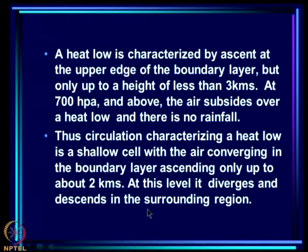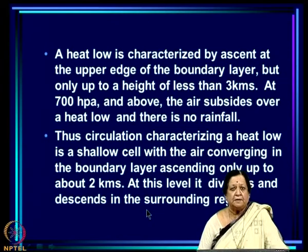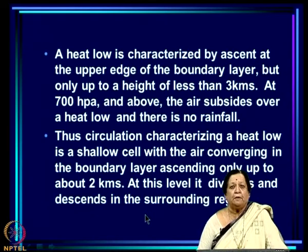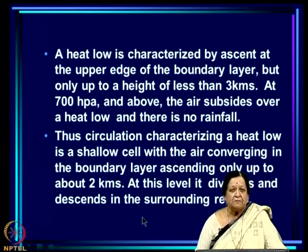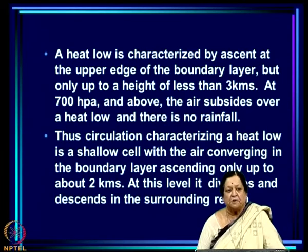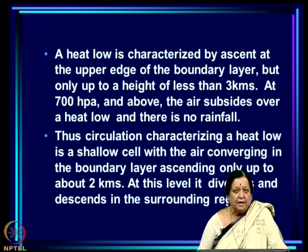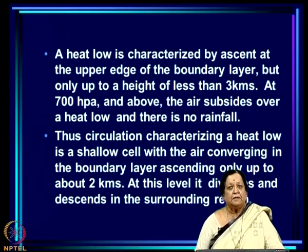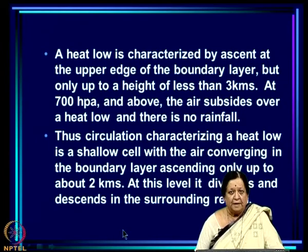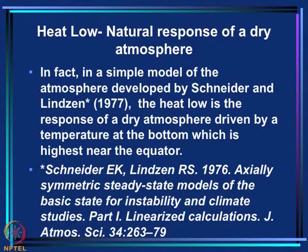What is the difference between the TCG and a heat low? A heat low is characterized by ascent at the upper edge of the boundary layer just like the ITCG, but only up to a height of less than 3 kilometers. At 700 hPa and above, the air subsides over a heat low and there is no rainfall. The ascent is restricted to the lower 2 kilometers, and the circulation is a very shallow cell with air converging in the boundary layer, ascending only to about 2 kilometers, then diverging and sinking in the surrounding region.